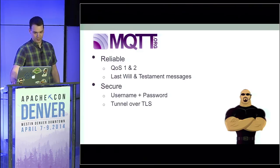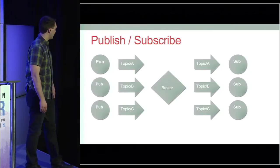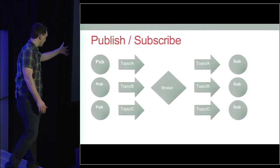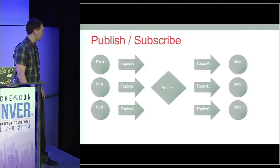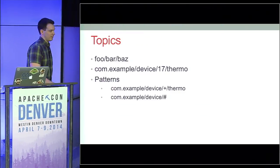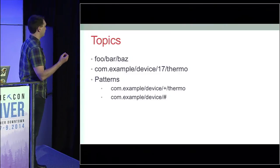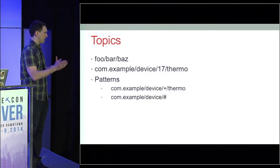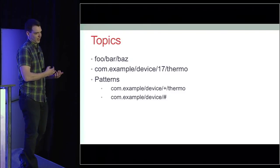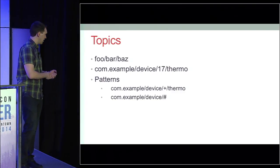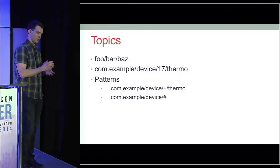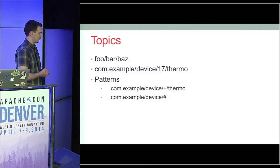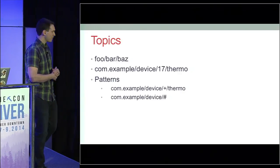With PubSub systems, you have a set of publishers and a set of subscribers. Similar to Kafka, we publish to topics. However, unlike Kafka, the topics are what we call dynamic topics — we have topic patterns. You might have a topic like com.example/device/ with a device ID and something else. There are two wildcards: a plus and a pound. The pound matches several topic segments, and a plus matches just one single topic segment. Topics are very rich — you don't need to declare them, which adds to the simplicity of MQTT.